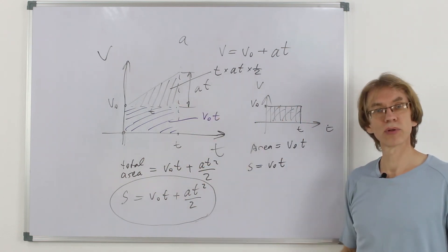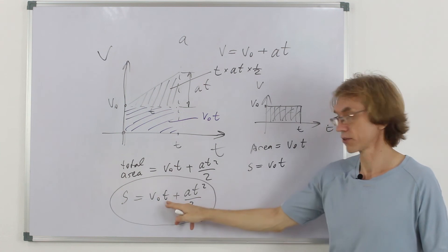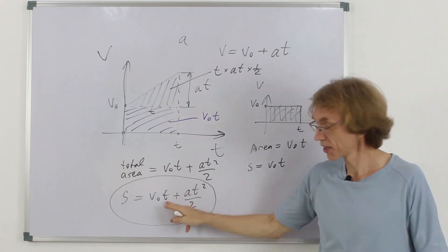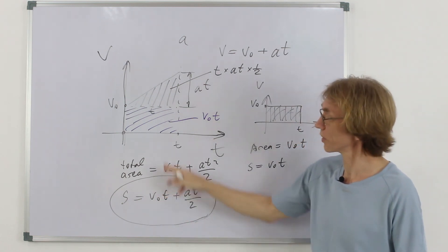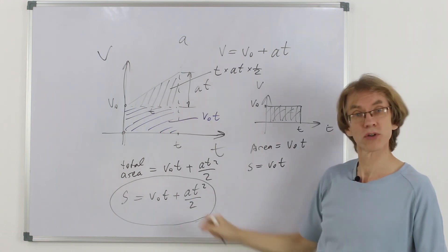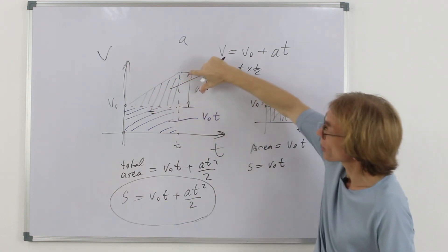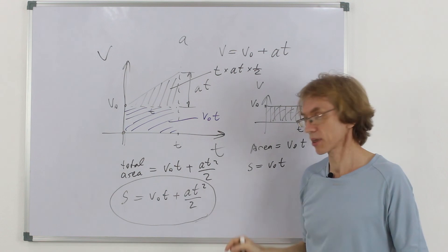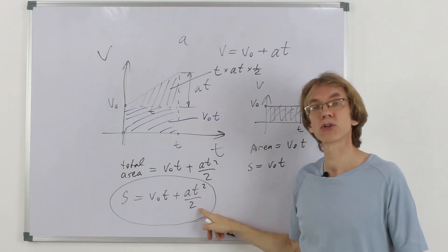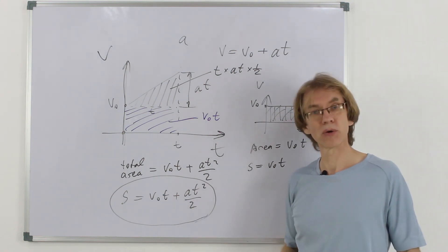And there is a simple geometrical meaning. This, the distance would be covered if the body were moving with constant velocity, which it had in the beginning. And this triangle is because the body was accelerating. So, this addition is coming because acceleration is not zero.